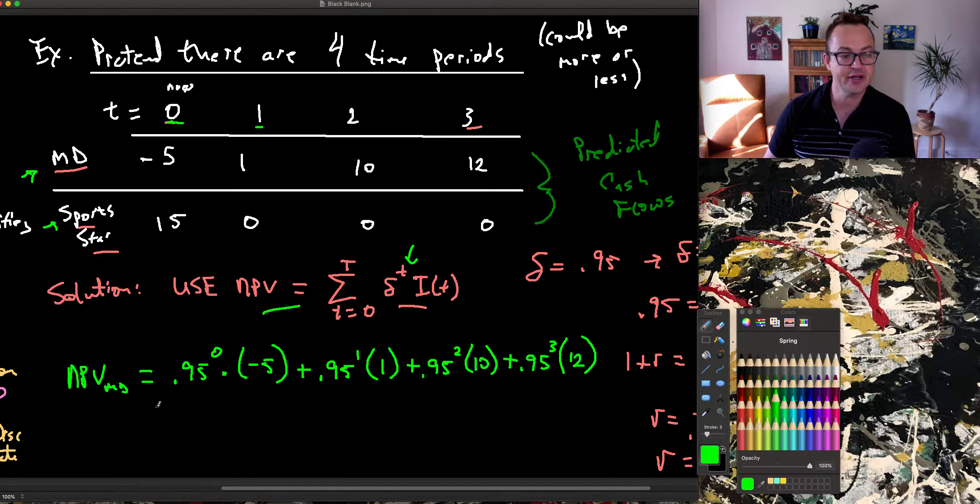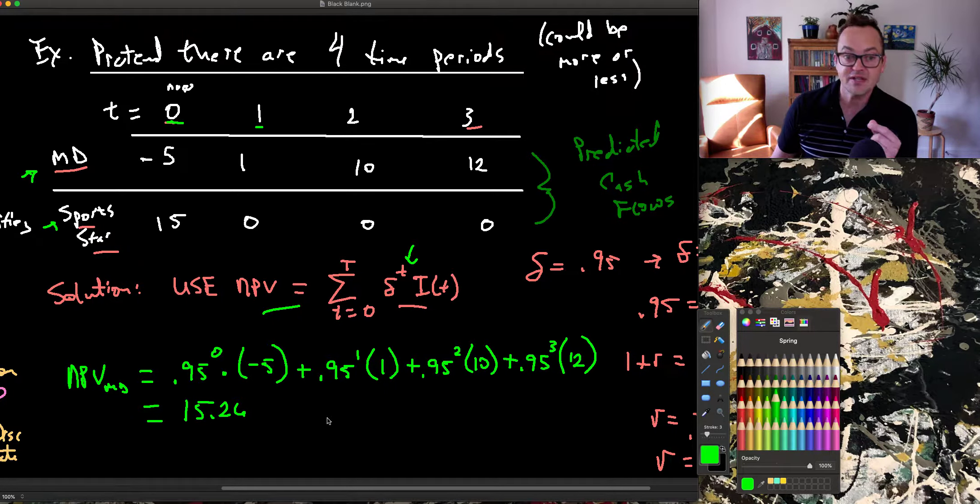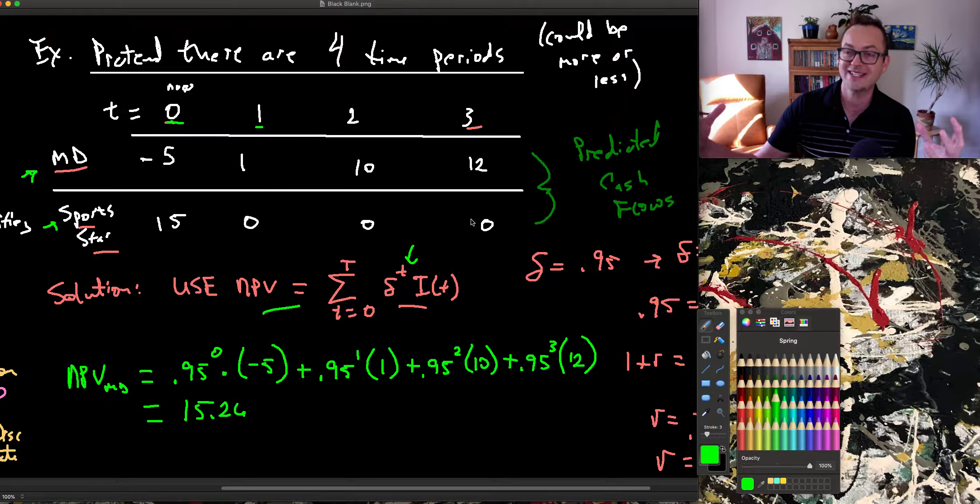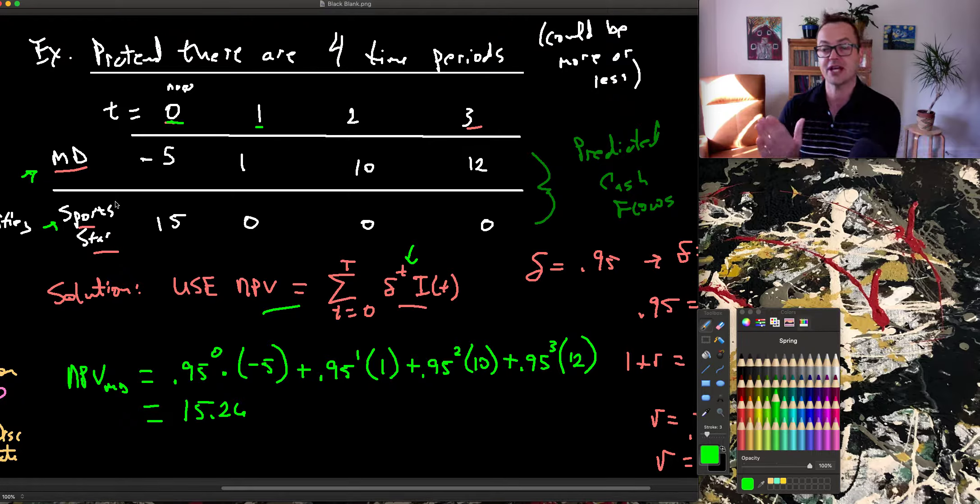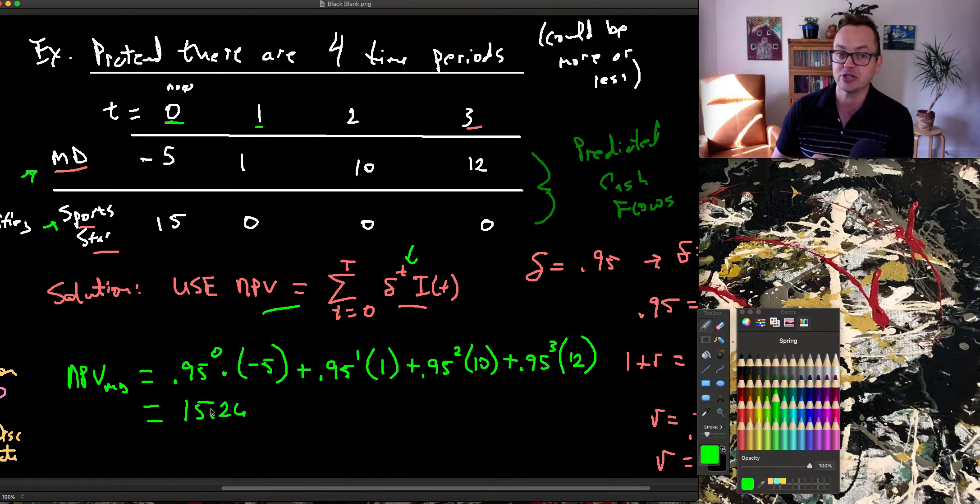If I put this into a calculator, this gives me 15.26. So that is the sum of all my cash flows discounted for time, putting all those cash flows over time into a present value. Attempting to equate these future positives with this current negative. Adding all those cash flows up, I get 15.26.